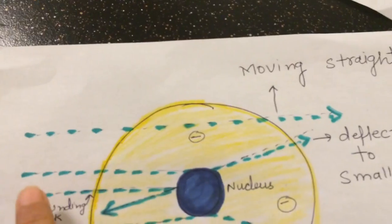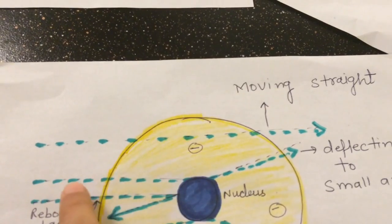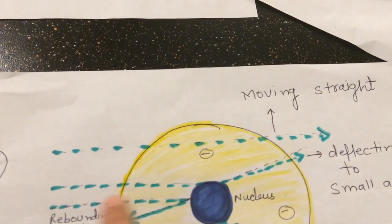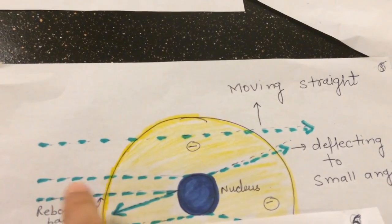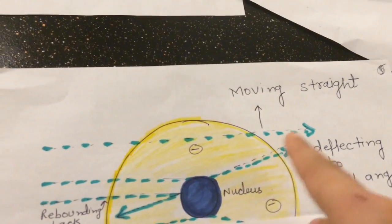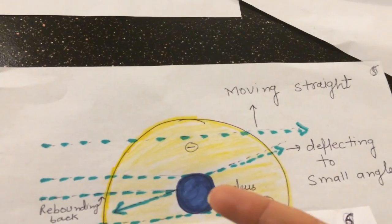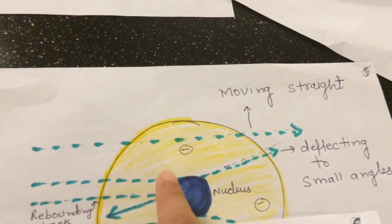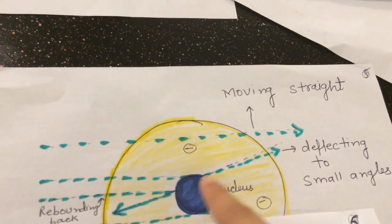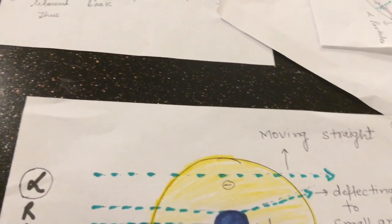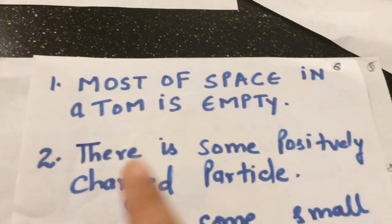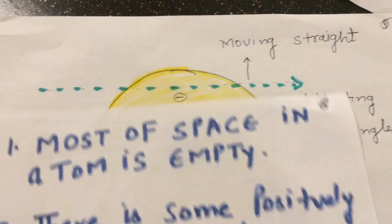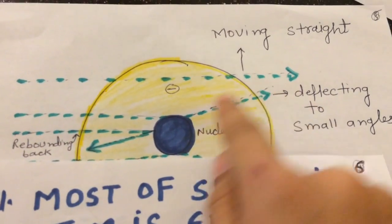Conclusion two: some alpha particles showed small-angle deflection, as if they were repelled by something. Since alpha particles are positively charged, and similar charges repel each other, this means there is something inside the atom that is also positively charged. Therefore, the second conclusion is that there is a positively charged particle inside the atom, which causes the small-angle deflection of the alpha particles.